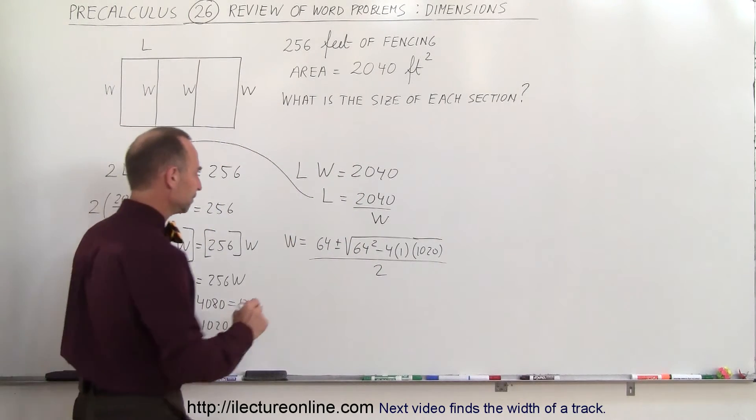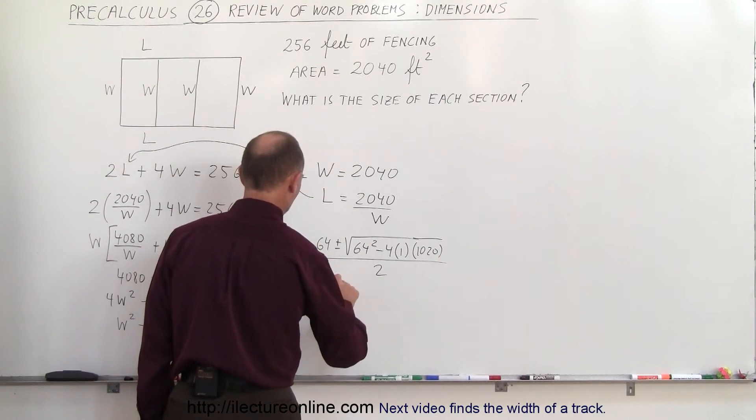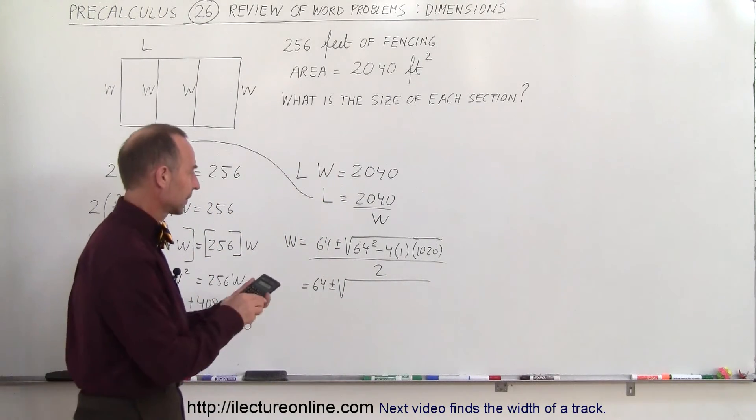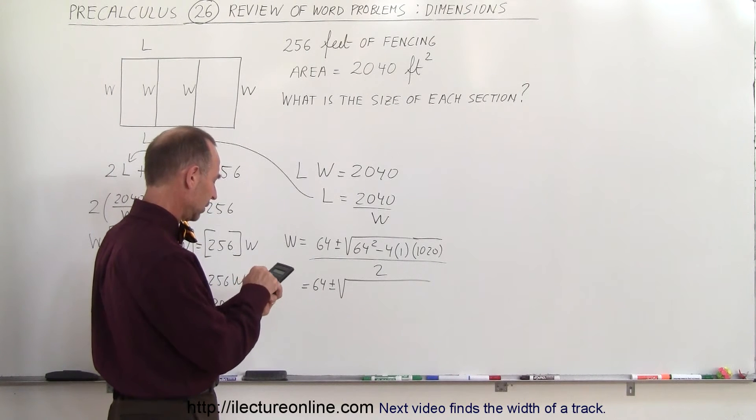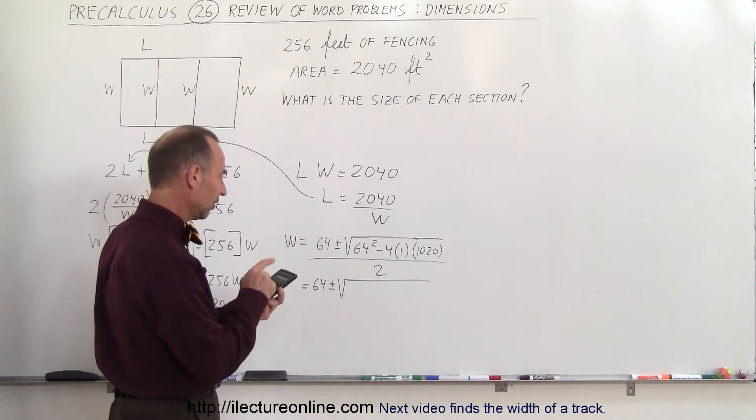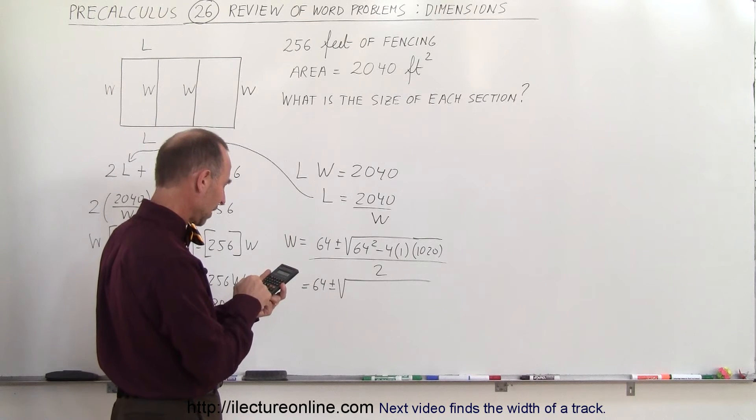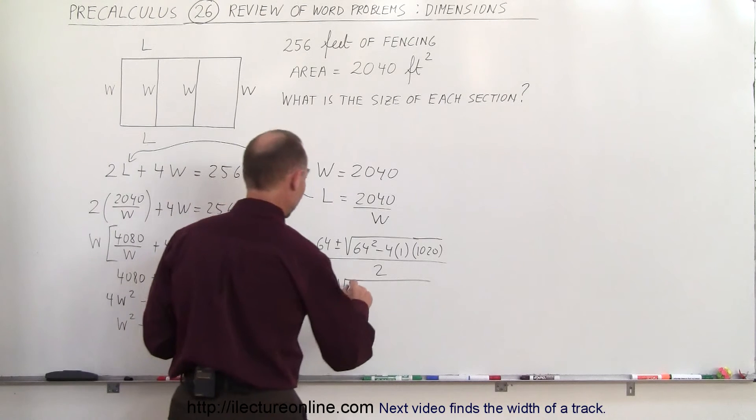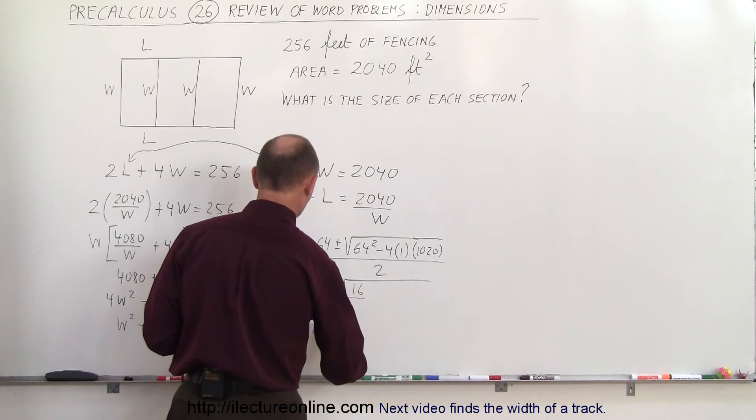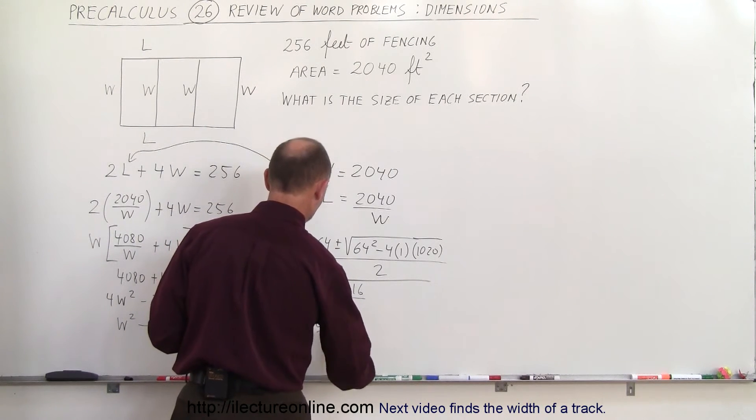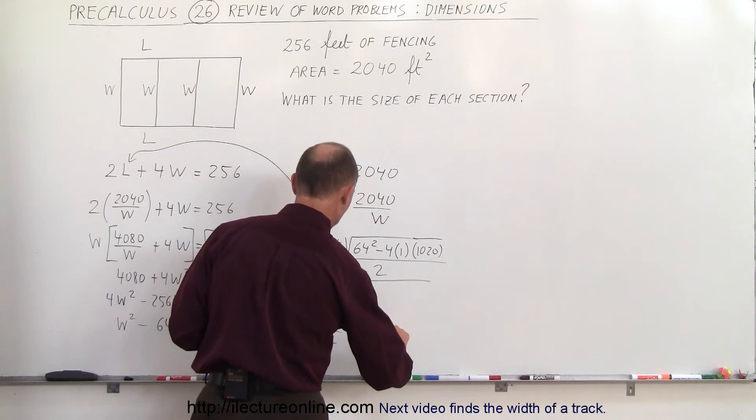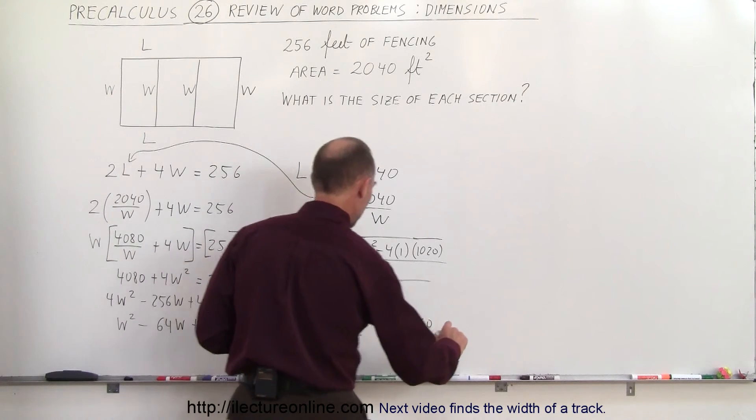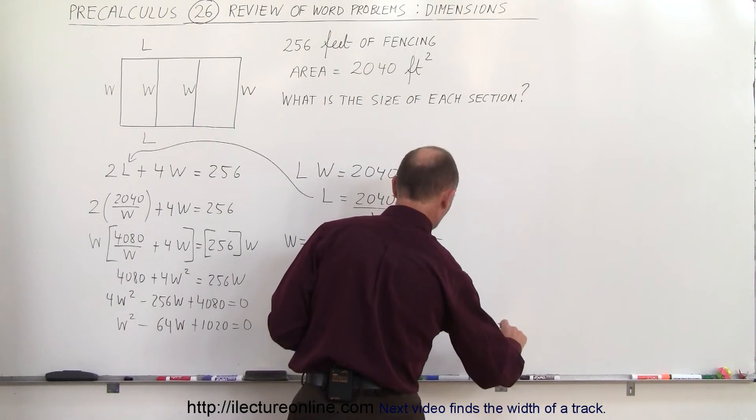Simplifying that a little bit, this is equal to 64 plus or minus the square root of, let's use a calculator. So we have 64 squared minus 4 times 1020 which is minus 4080, that's a square root of 16, all divided by 2 which is equal to 64 plus or minus 4 divided by 2 which is equal to 68 divided by 2 or 60 divided by 2 which means it's equal to 34 or 30.